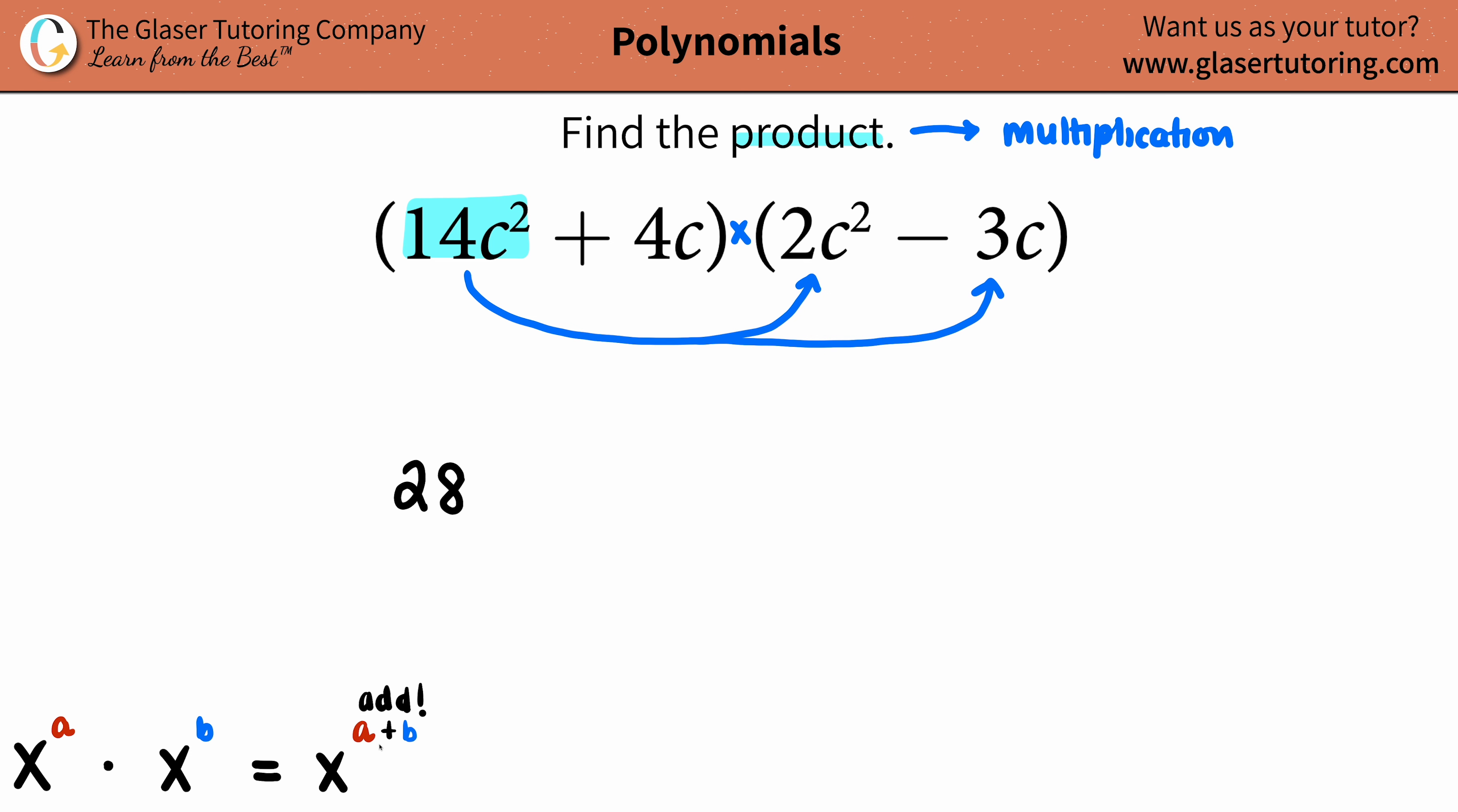In this case, I have c² times c². What am I going to do with those two numbers? We're going to add them. Always addition. In this case, we have 2 + 2 is 4, so now you got a total of four c's. So c to the fourth.